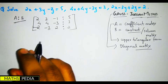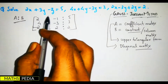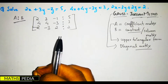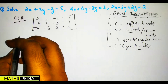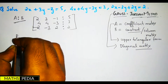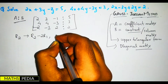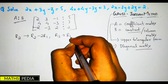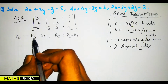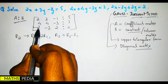We have written the augmented matrix. Now we apply row transformations to make the non-diagonal elements zero. We start by operating on R2 and R3: R2 = R2 − 2R1, and R3 = R3 − R1.